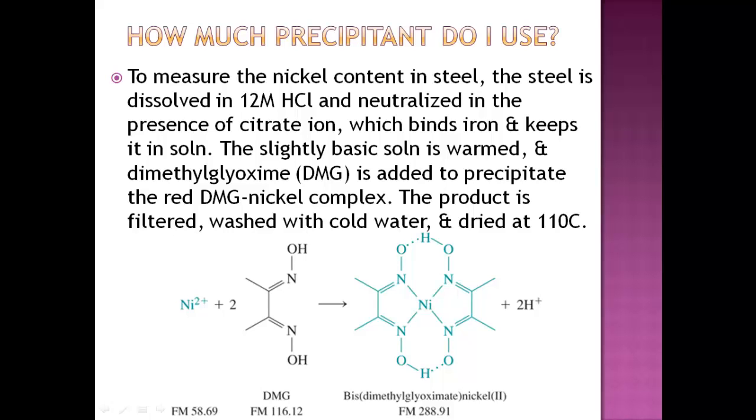The slightly basic solution is warmed and dimethylglyoxime, DMG, is added to precipitate the red DMG-nickel complex. The product is filtered, washed with cold water, and dried at 110 degrees Celsius. They've got the steel that they dissolve into a strong acid, and they neutralize it in the presence of this ion, and that binds the iron and keeps it in solution. What's left, what's not bound, is the nickel. After they have that nickel in solution, they add this DMG to react with the nickel so that they can precipitate out this blue DMG-nickel complex.